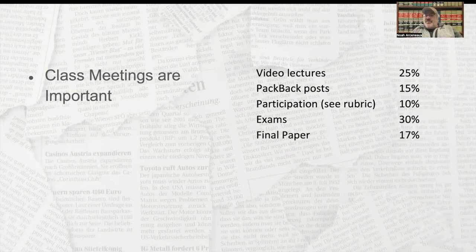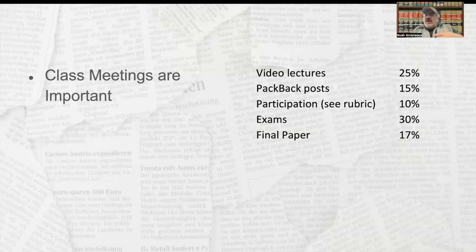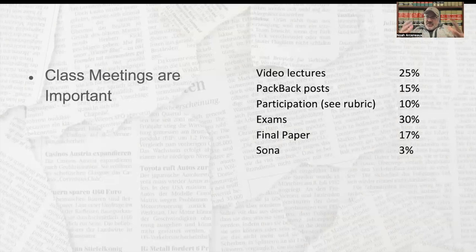There's going to be a final paper. The instructions for that will be on Canvas very soon. This is due near the end of the semester — a short paper analyzing some aspect of the First Amendment. And then there's something called SONA, which most of y'all are probably familiar with. SONA is worth a very, very small percentage of the grade. That is the grading criteria, and all of this is also in the syllabus.